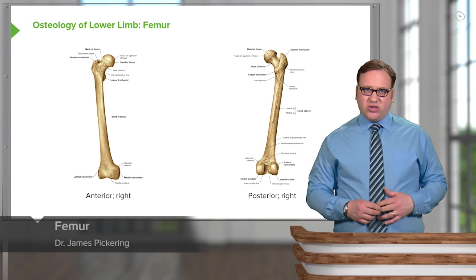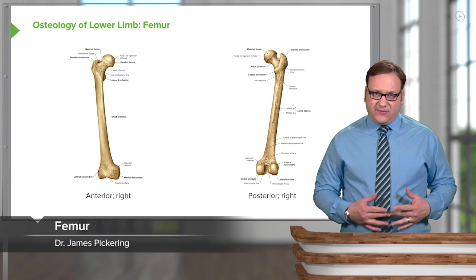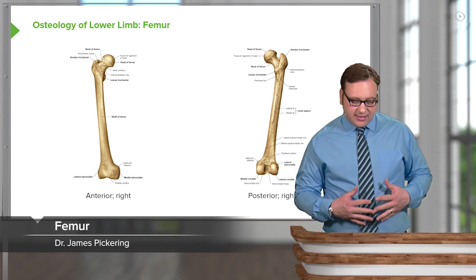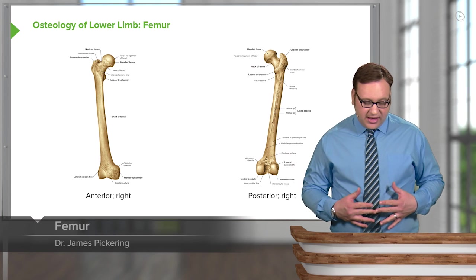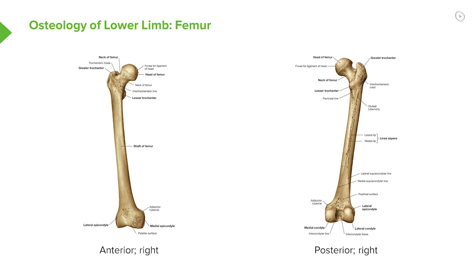So now let's move on to the femur, which is the thigh bone within the thigh. We can see here we have an anterior right femur and we have a posterior right femur.